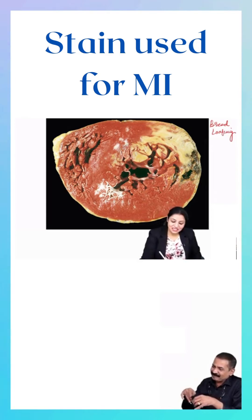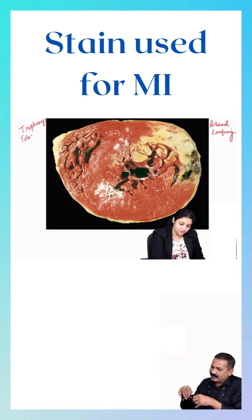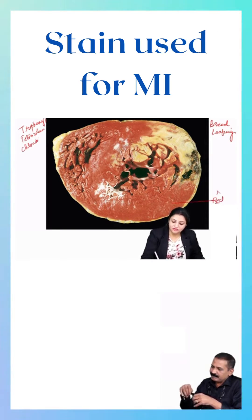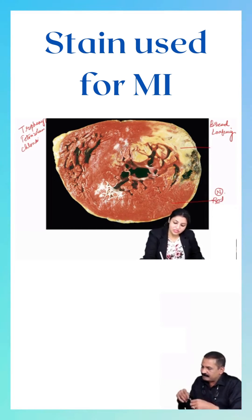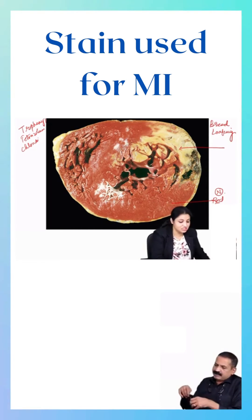If you look at this, this is TTC stain — Triphenyl tetrazolium chloride. And if you look at this, this part is brick red in color. This is normal viable heart. But can everybody look at this part — this part of the heart is not stained.